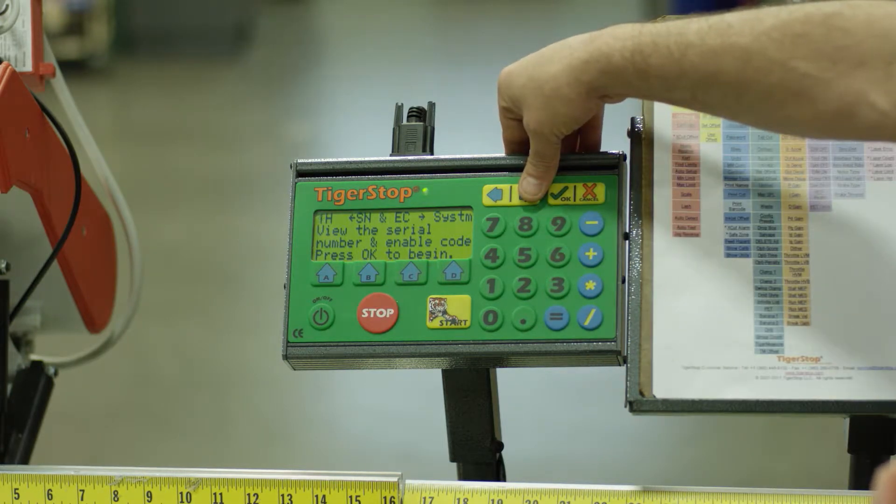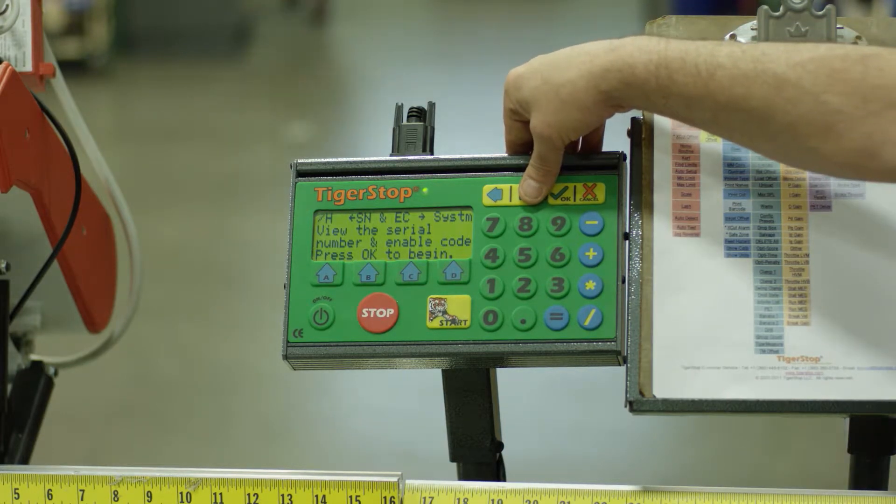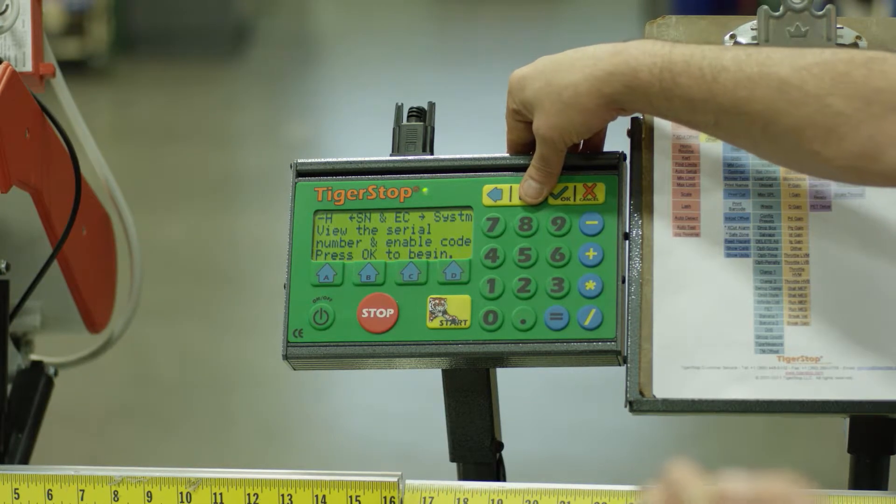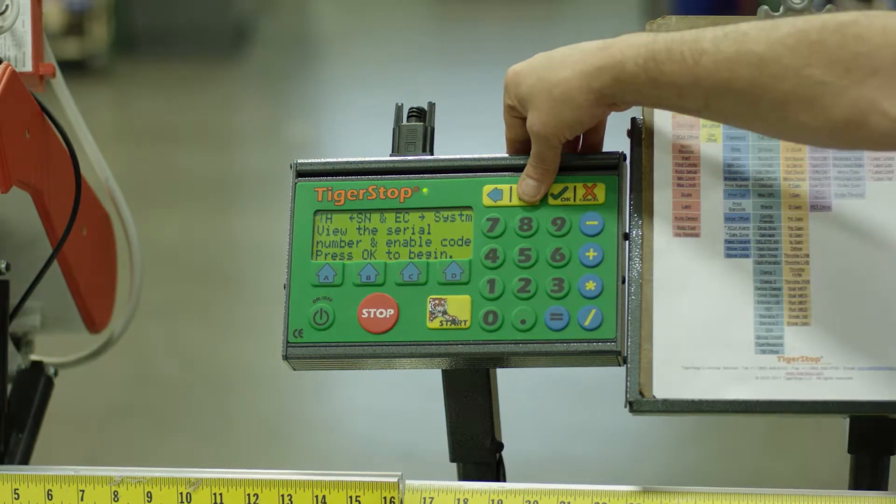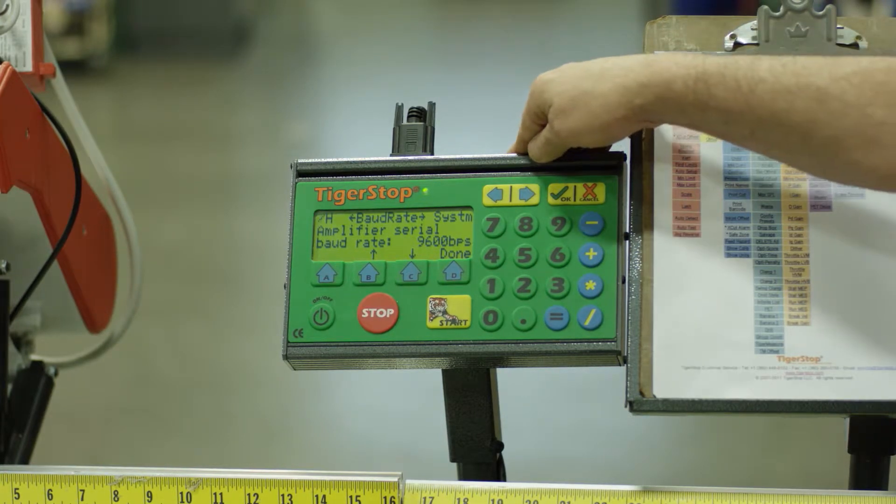I'm going to hit the right arrow to scroll down. Should I pass the setting that I desire to evaluate, I can hit the left arrow to scroll back up. I'm going to scroll down to see my baud rate.